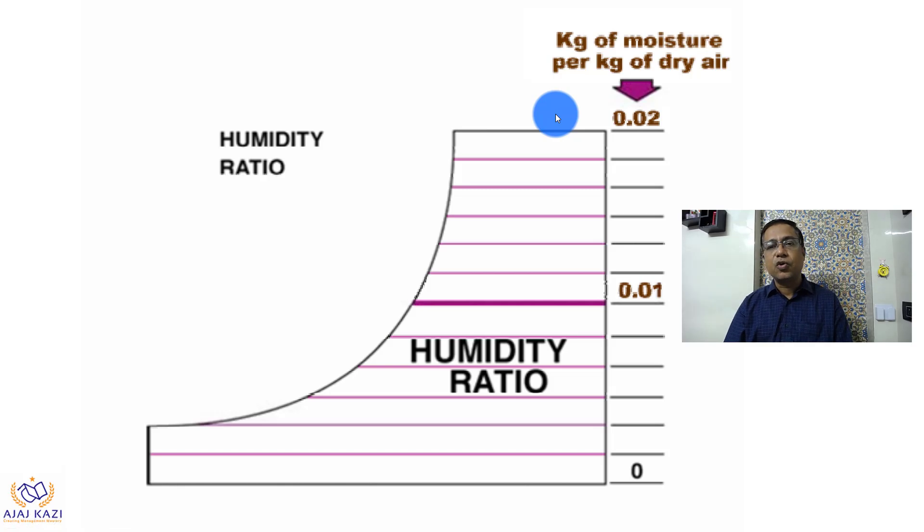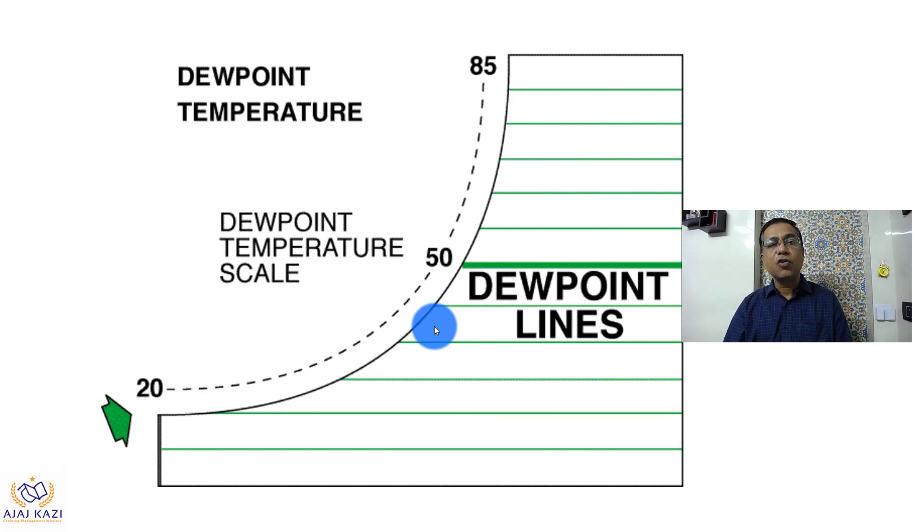The next one is humidity ratio, or kilograms of moisture per kilogram of dry air. These are the horizontal lines which give the humidity ratio. The next is the dew point temperature. This is a scale which these lines hit on the curve over here, and that gives the dew point temperatures. It starts from 20, 50, 85.